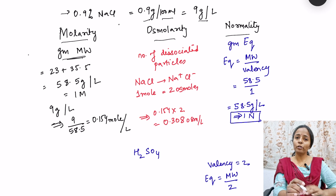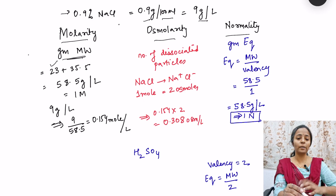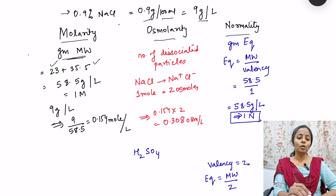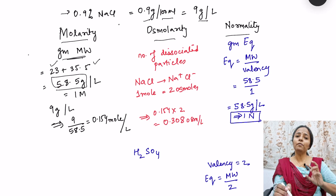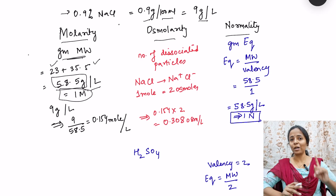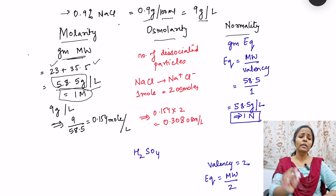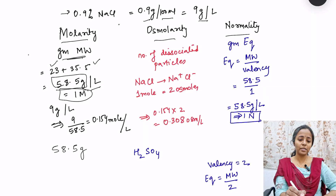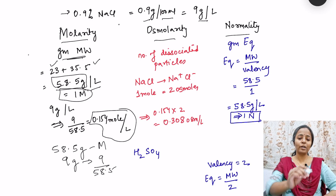What is the gram molecular weight of NaCl? Sodium has an atomic weight of 23 and chlorine is 35.5, so we add them to get 58.5 grams — that is the gram molecular weight. When 58.5 grams is dissolved in one liter, it is a one molarity solution. So for 9 grams, we calculate 9 divided by 58.5, which gives 0.154 moles.